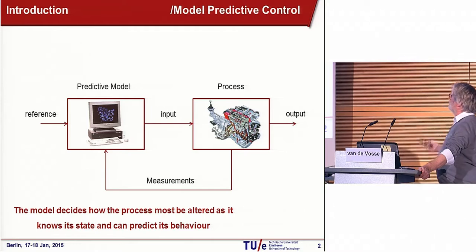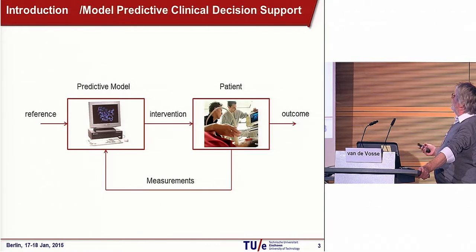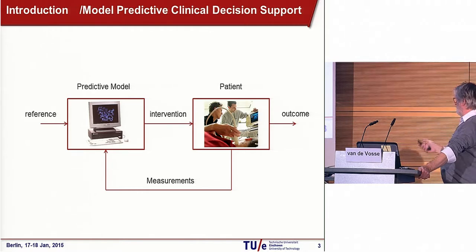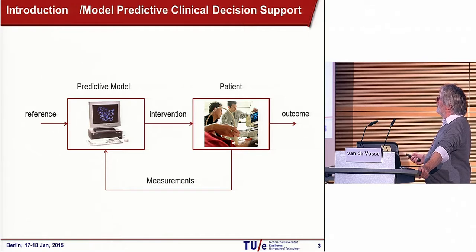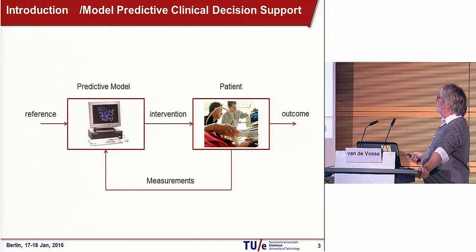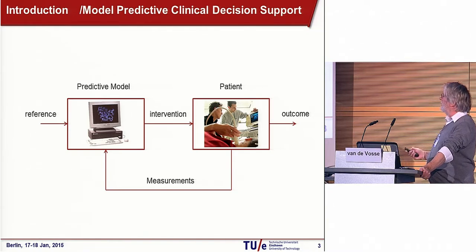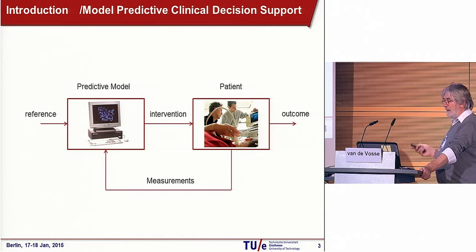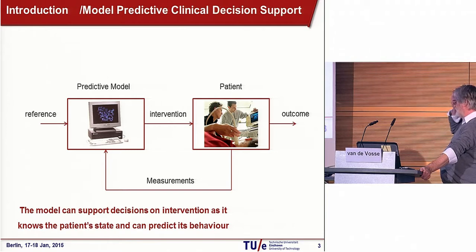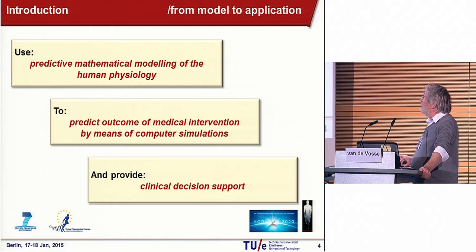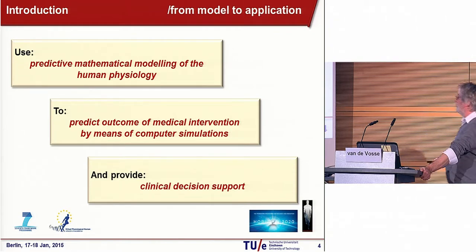That's a nice system that works quite well in technology. If we transfer this to what we do in the clinic, of course the process is a patient. We can measure all kinds of things, and we've seen quite some interesting ways to measure data from the patient, so we know more or less the state. If we would have a predictive model that could tell us how to intervene and could predict the outcome, we would have the same kind of system. I would call this model predictive clinical decision support. For that, we need a model that predicts the outcome of intervention, and that's what I will talk about. The model can support decisions on intervention as it knows the patient's state and can predict the behavior.